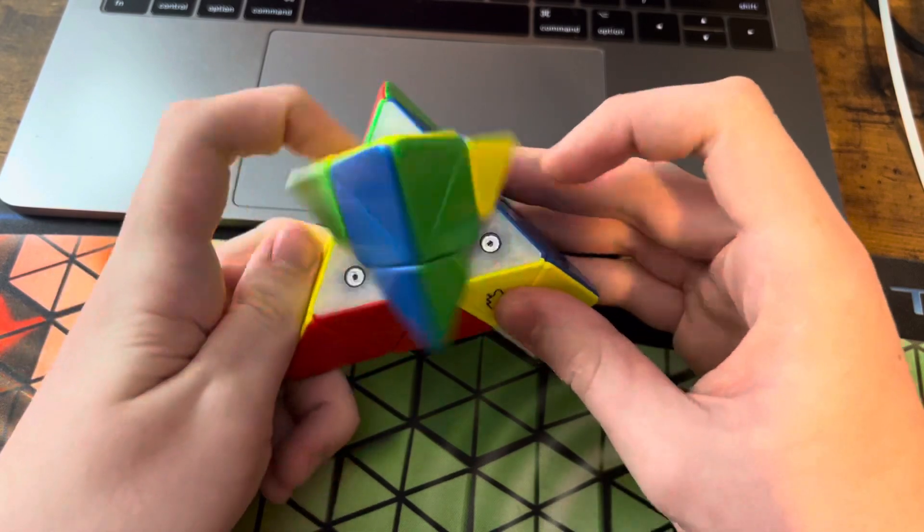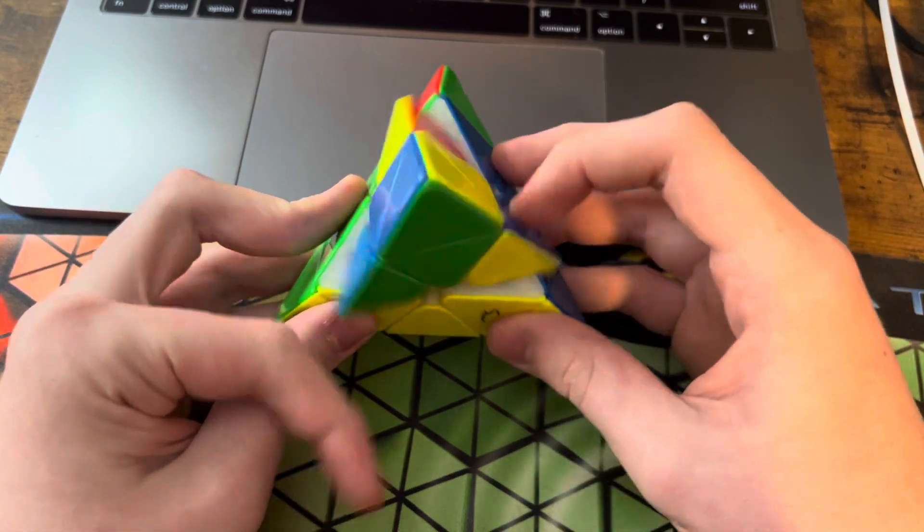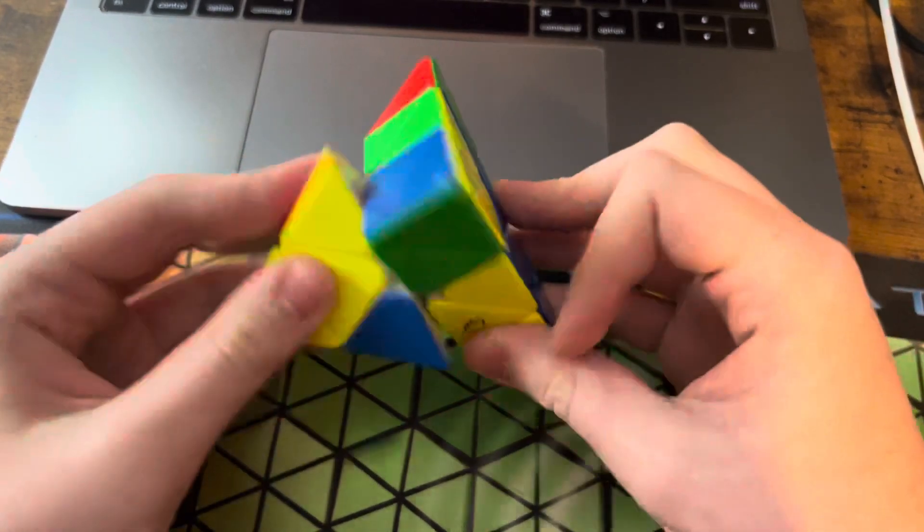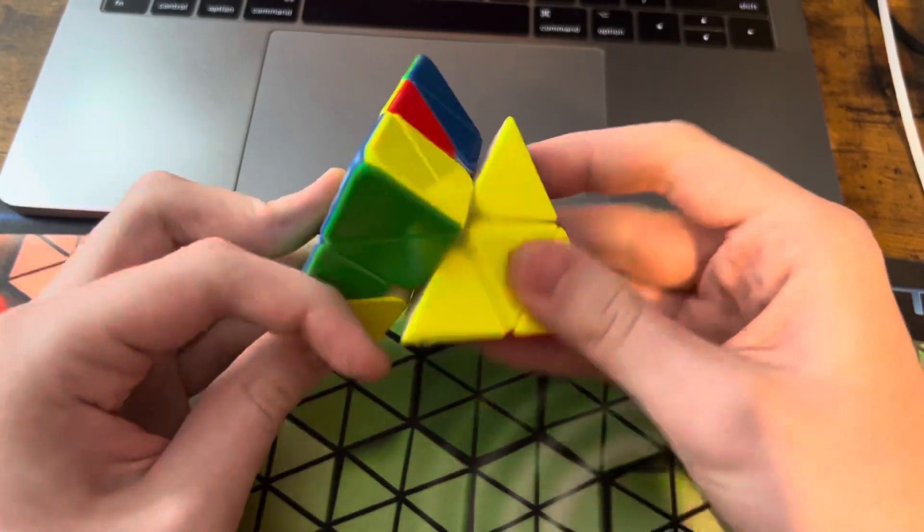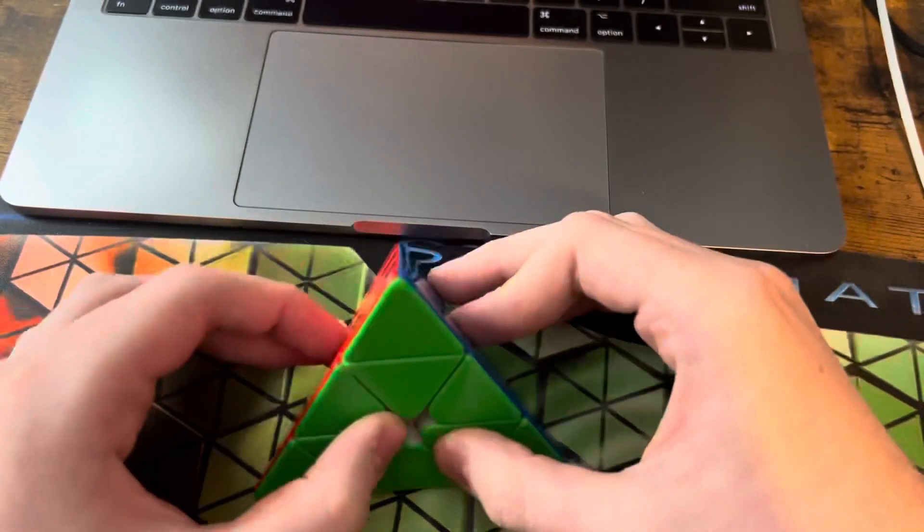Where you solve this edge like that, and then you insert. And that skips both AUFs, so that's the ALG that I did.